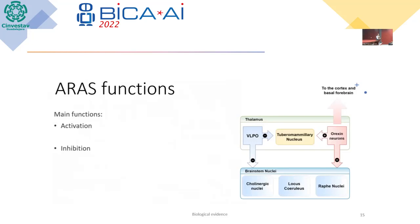The ARAS — the ascending reticular activation system — has two main functions: activation and inhibition. Activation is driven by neurotransmitters like orexin, dopamine, serotonin, etc., and inhibition is driven by other neurotransmitters like GABA, produced in specific nuclei. These neurotransmitters modulate the functional alertness level — the level of vigilance in the system.